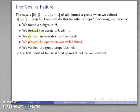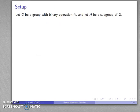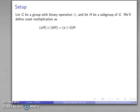This is the first place we may actually run into problems. The first point of failure might be that our coset multiplication is not well-defined. So let's see if we can investigate when this might happen. Let G be a group with binary operation plus and let H be a subgroup.